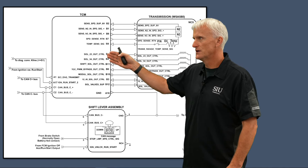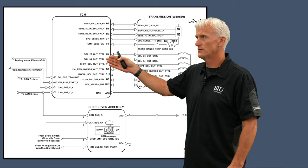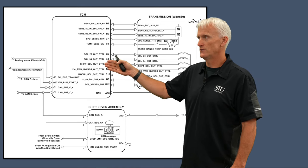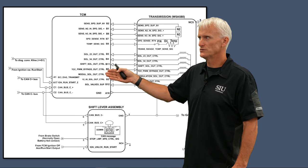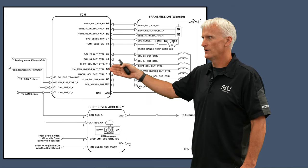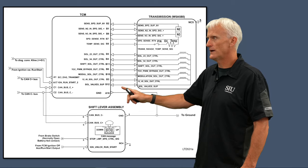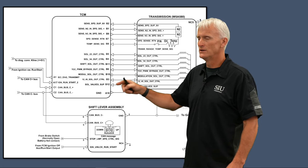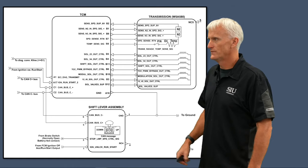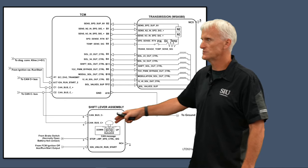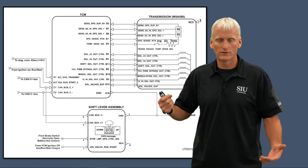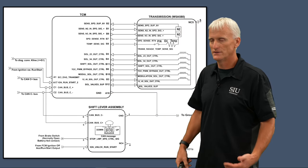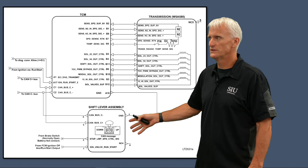These right here are solenoid circuits. We've got the 2-3 shift solenoid, the 3-4 shift solenoid, the 1-2/4-5 shift solenoids, the shift pressure solenoid, the torque converter clutch PWM solenoid, and the line pressure solenoid — six solenoids total. Power supply delivers 12 volts through the solenoid coils in the transmission and back to the TCM, which controls the ground. The shift lever assembly communicates to the TCM via CAN bus — it's not a hardwired circuit, it's a module broadcasting its position through the network.